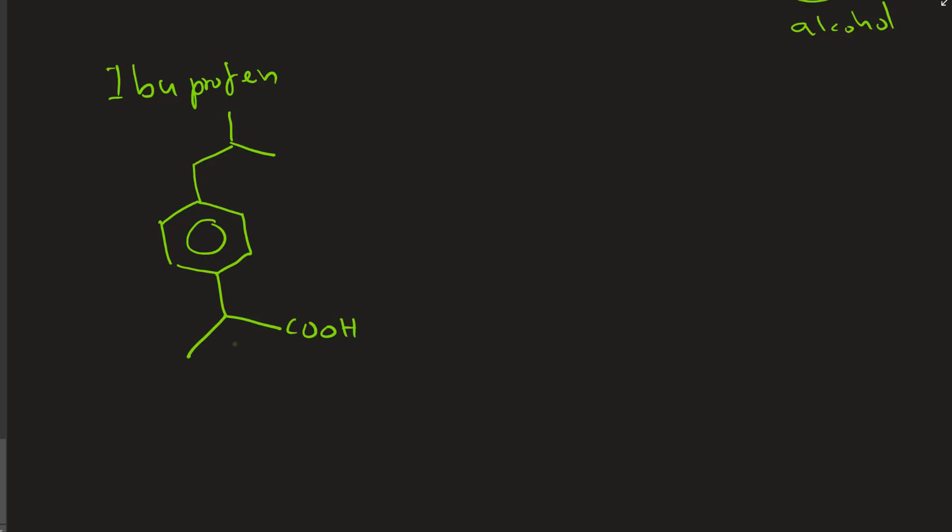Yeah. Ibuprofen. So this is the ibuprofen molecule. And then let's look at the functional groups. There's a carboxylic. There's a chiral center. Just try to identify the chiral center and try to find out whether it's R and S. So there's a carboxylic group. There's aromatic ring, the benzene ring.